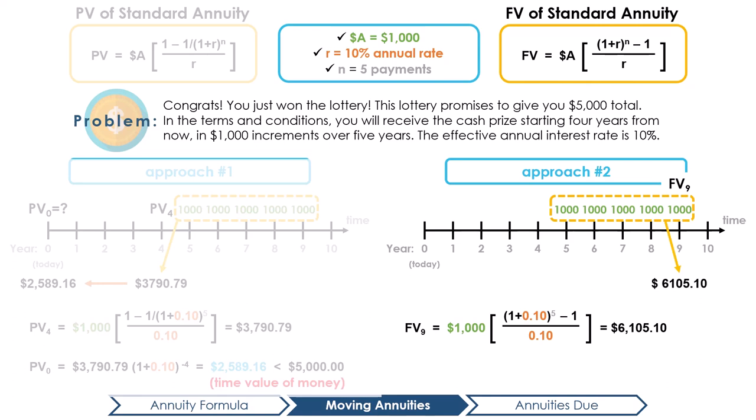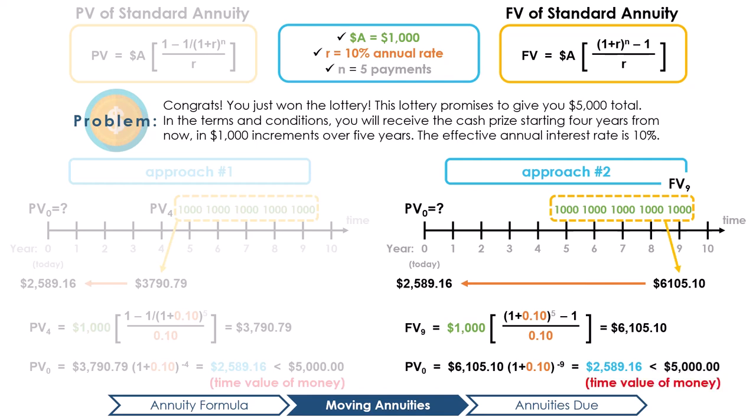Following this, we would need to discount the value at FV9 back to time 0, i.e. PV0. Pause here and do this now. Just like when we discounted the value of PV4 back to PV0, when discounting FV9 equals $6,105.10 back 9 years to PV0, the value of the annuity in today's dollars is $2,589.15.